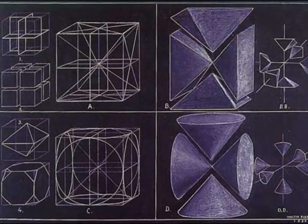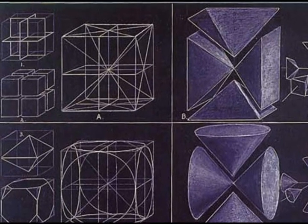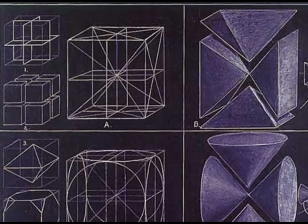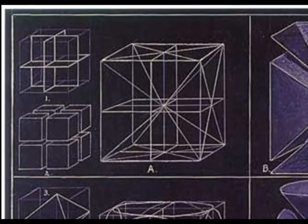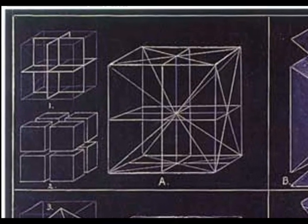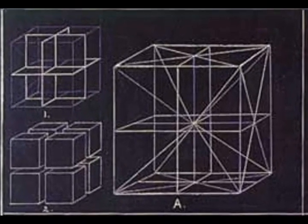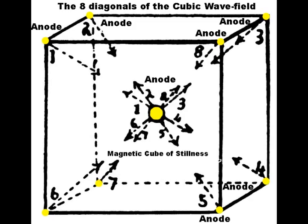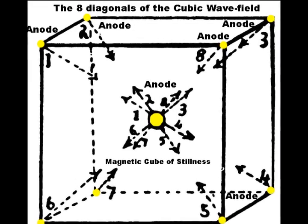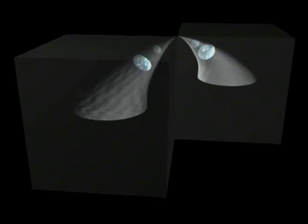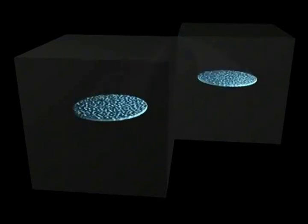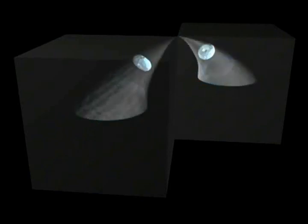Eight trihedral corner reflectors are also to be found at the center of each cube. The three inner planes of the cube create eight corner reflectors which are the magnetic control for eight electric vortices as they thrust back and forth between the eight outer corner reflectors of the cube.